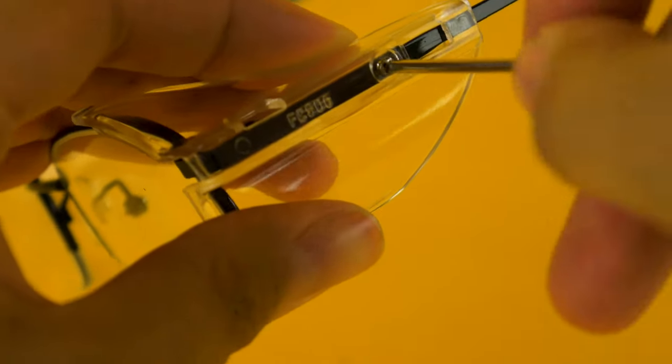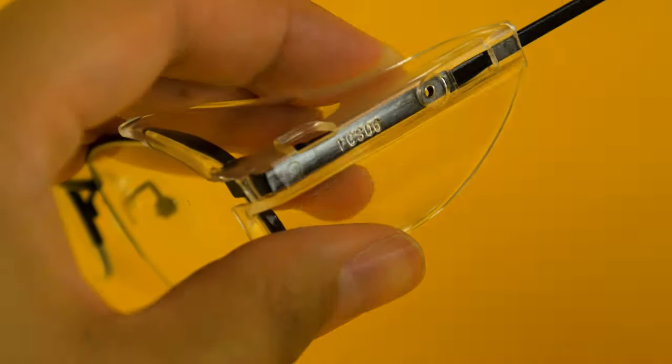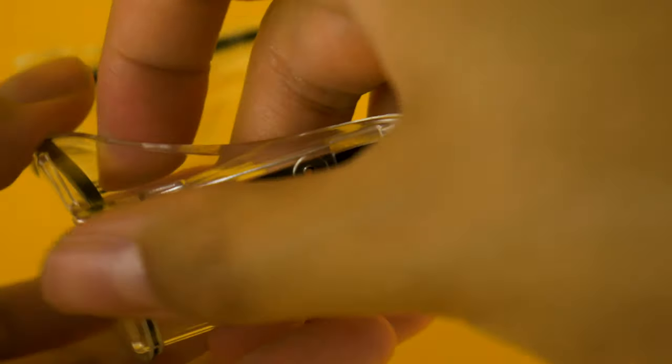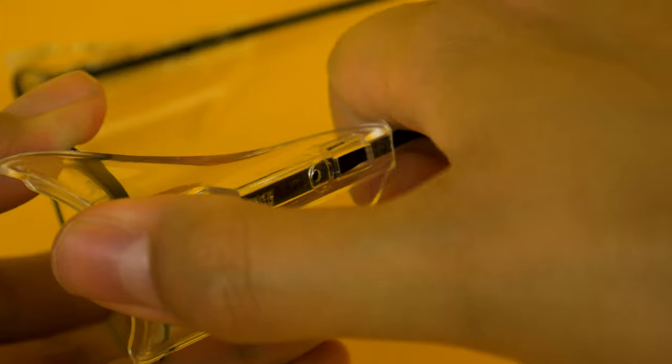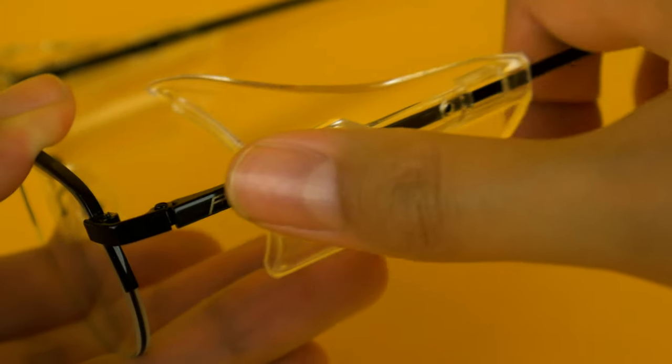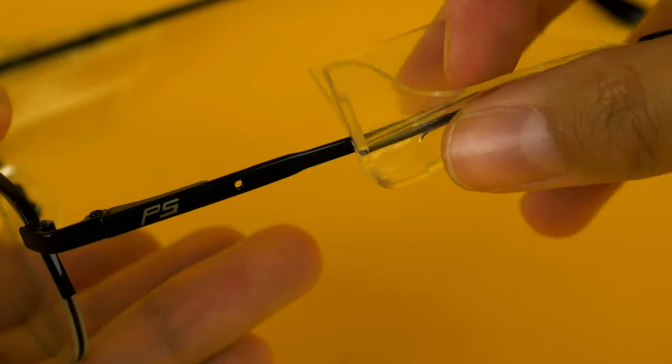So take out the screw. Then in order to easily remove the side shield, I close the glasses a little bit and then simply slide the side shield to the back.